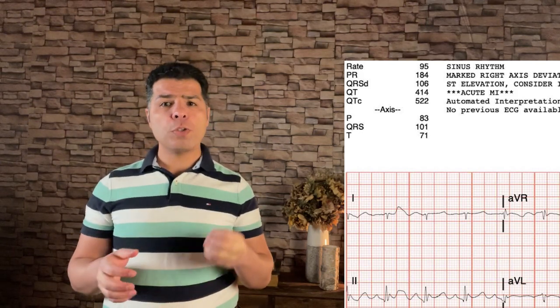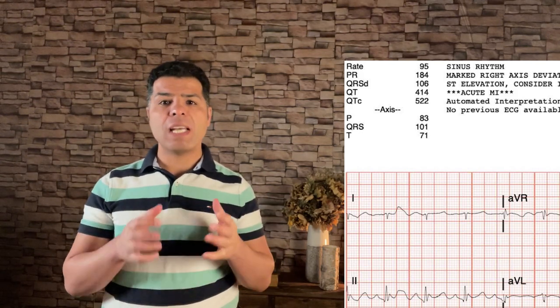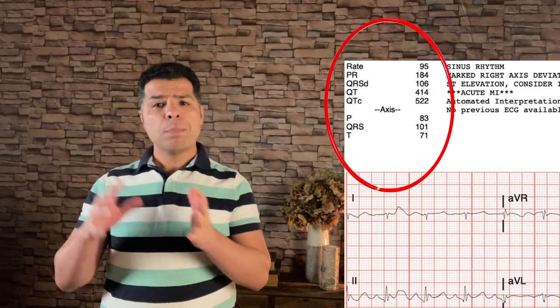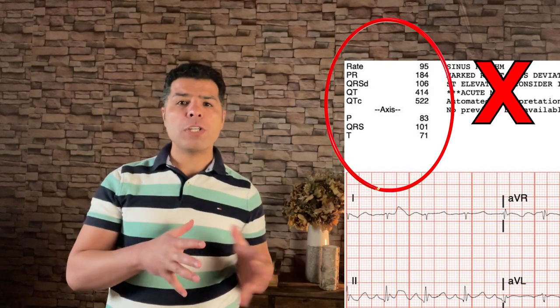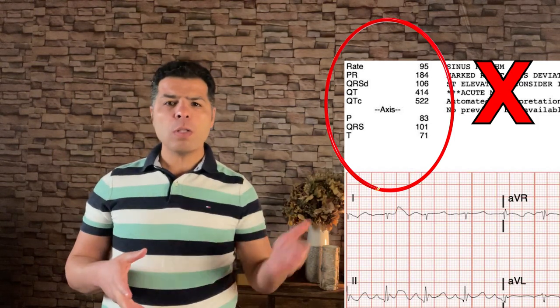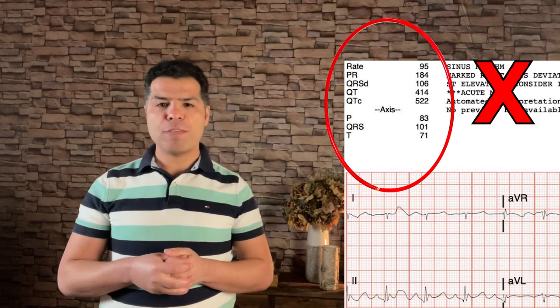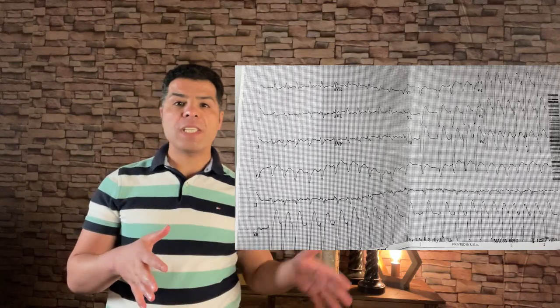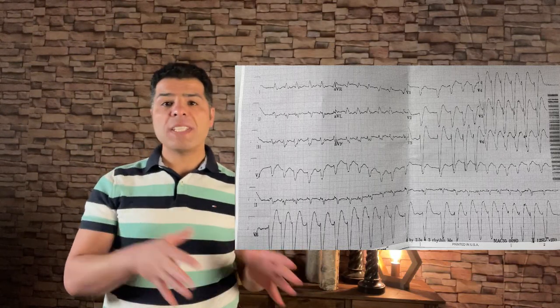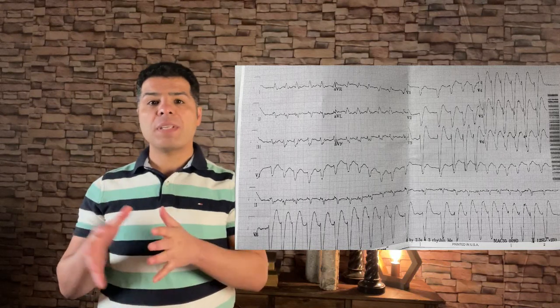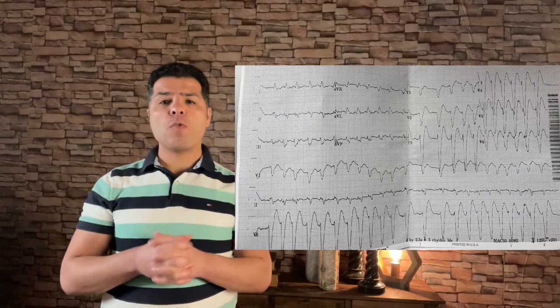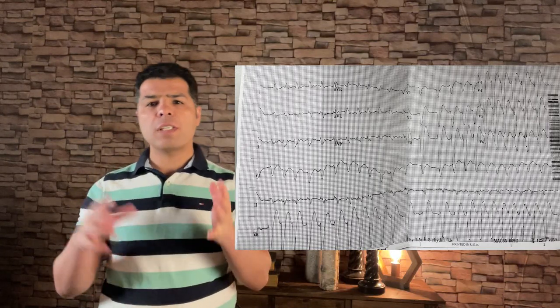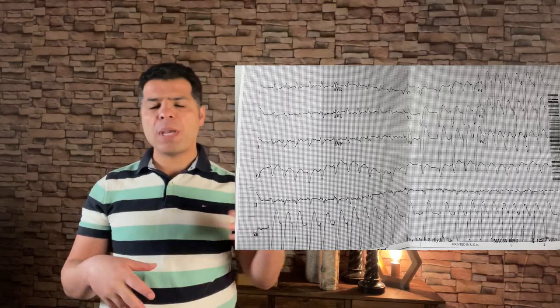As a side note, computer interpretation is pretty accurate in calculating the rate, intervals, and axis, but not so much in all other interpretations including ischemic changes, although this may get better in the future. Next, if the QRS complex duration is wide — more than 100 milliseconds — we need to find out why before proceeding. If the QRS is narrow — less than 100 milliseconds — then skip this step. Quickly look for causes of wide QRS: bundle branch block (right or left), intraventricular conduction delay, paced rhythm, etc.